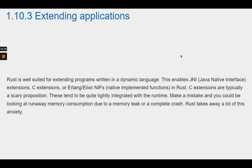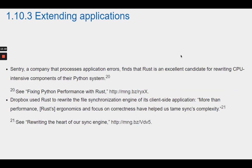Section 1.10.3 Extending Applications. Rust is well-suited for extending programs written in a dynamic language. This enables JNI, or Java Native Interface extensions, C-Extensions, or Erlang/Elixir NIFs — Native Implemented Functions — in Rust. C-Extensions are typically a scary proposition, as they tend to be quite tightly integrated with the runtime. Make a mistake and you could be looking at runaway memory consumption due to a memory leak or a complete crash. Rust takes away a lot of this anxiety. Sentry, a company that processes application errors, finds that Rust is an excellent candidate for rewriting CPU-intensive components of their Python system.